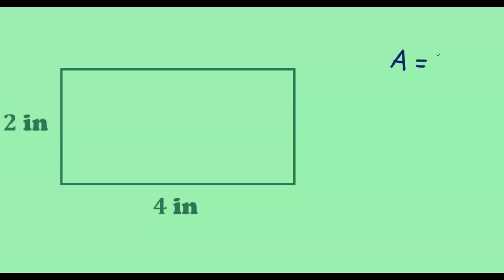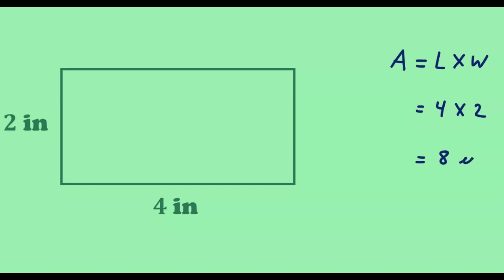The formula for area is l times w. The length is 4 and the width is 2, so we have 4 times 2, which equals 8. Since the length and width are given in inches, the unit of the area will be square inches, so the area is 8 square inches.